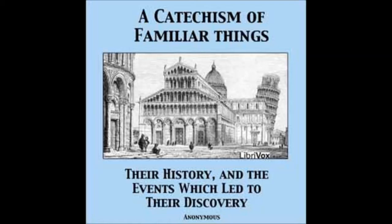They are the Tuscan, the Doric, the Ionic, the Corinthian, and the Composite, each possessing its peculiar form and beauty, and found in all the principal buildings of the Christian world.